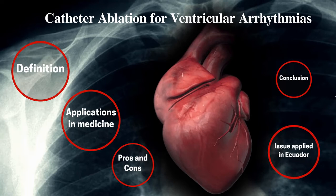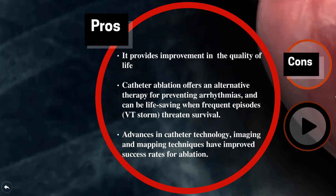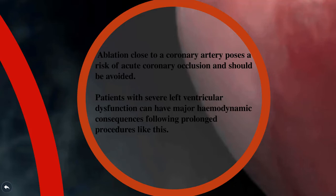Pros: Catheter ablation provides improvement in quality of life, offers an alternative therapy for preventing arrhythmias, and can be life-saving when frequent episodes threaten survival. Advances in catheter technology, imaging, and mapping techniques have improved success rates. Cons: Ablation close to a coronary artery poses a risk of acute coronary occlusion and should be avoided. Patients with severe left ventricular dysfunction can have major hemodynamic consequences following prolonged procedures.